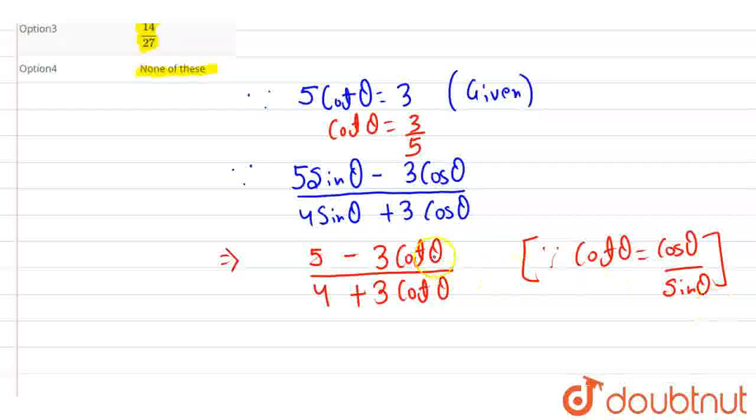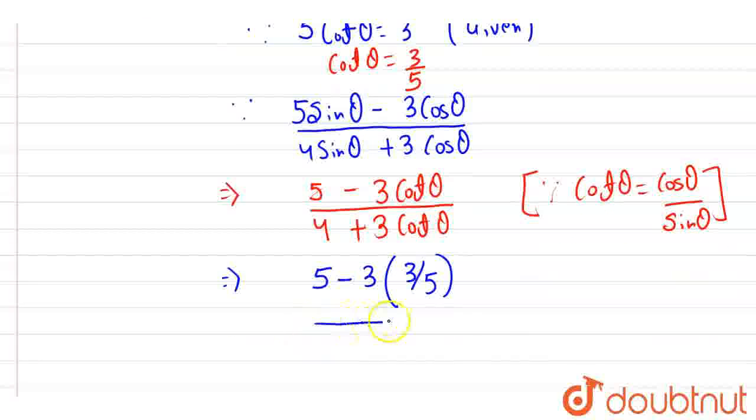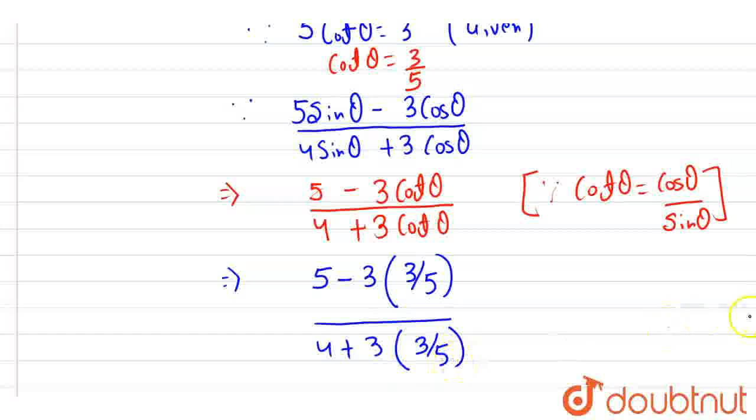Now, let's substitute the value of cot θ, which is 3/5. Therefore, our expression becomes (5 - 3 × 3/5)/(4 + 3 × 3/5).